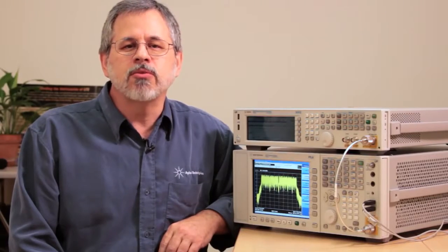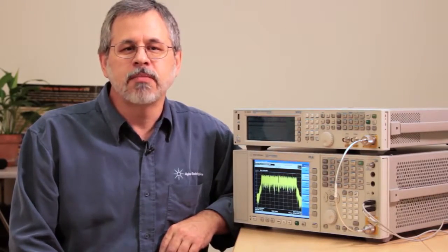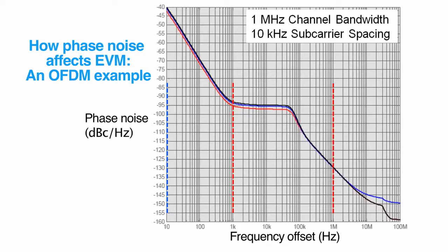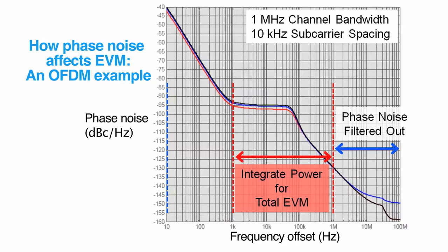But in OFDM systems, all phase noise is not the same. Phase noise at wide offsets compared to the channel is generally filtered out. Phase noise at intermediate frequencies within the channel does add to EVM.